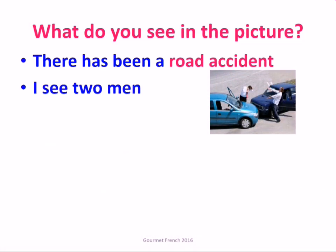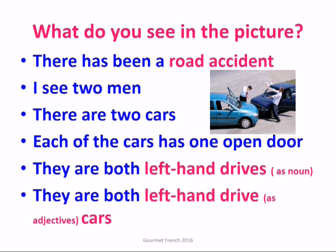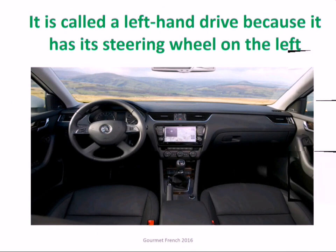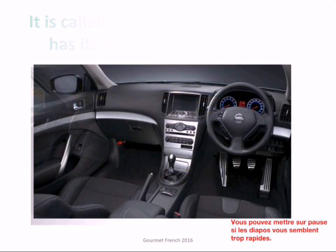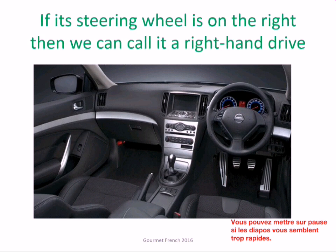There's been a road accident. I see two men. There are two cars. Each of the cars has one open door. They're both left-hand drive cars. It's called a left-hand drive car because it has a steering wheel on the left. If the steering wheel is on the right, then we call it a right-hand drive.